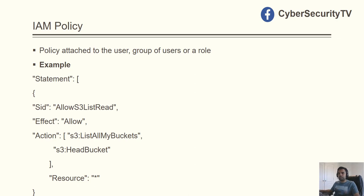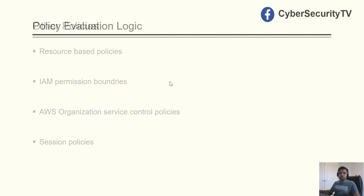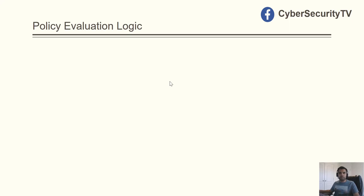There are other policy types besides identity-based policies. There's resource-based policy, which is attached to the resource itself. There are IAM permission boundaries — you cannot go beyond the boundary. There's also service control policy, part of AWS Organizations — if applied to a master account, it propagates to all child or member accounts. And there are session policies as well.